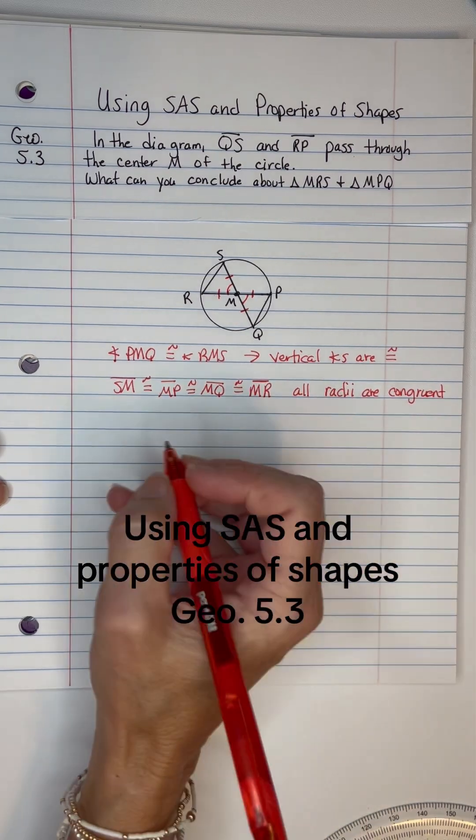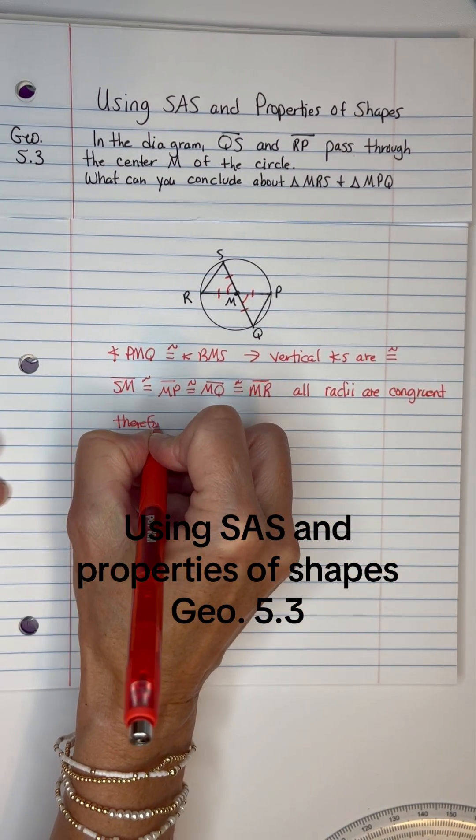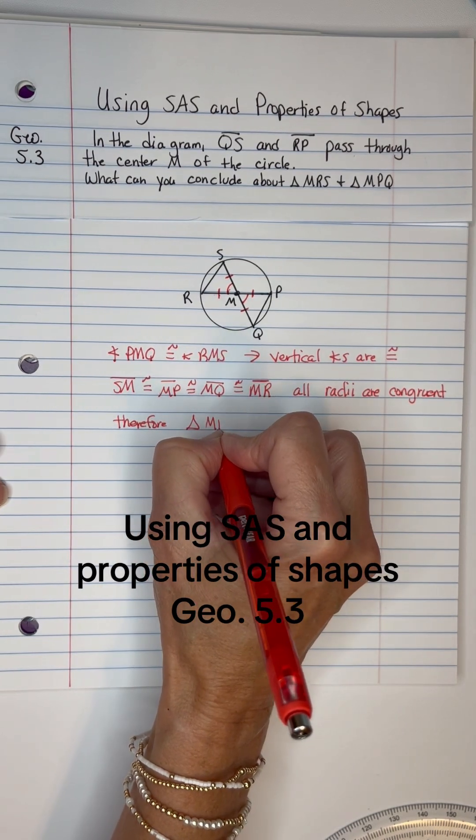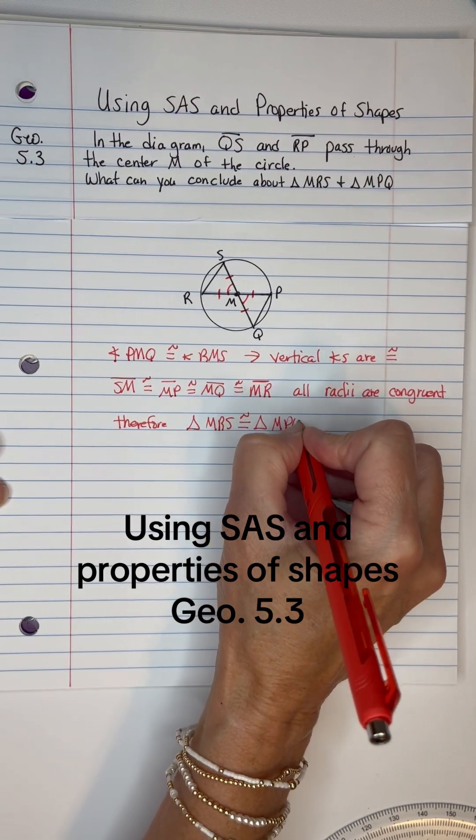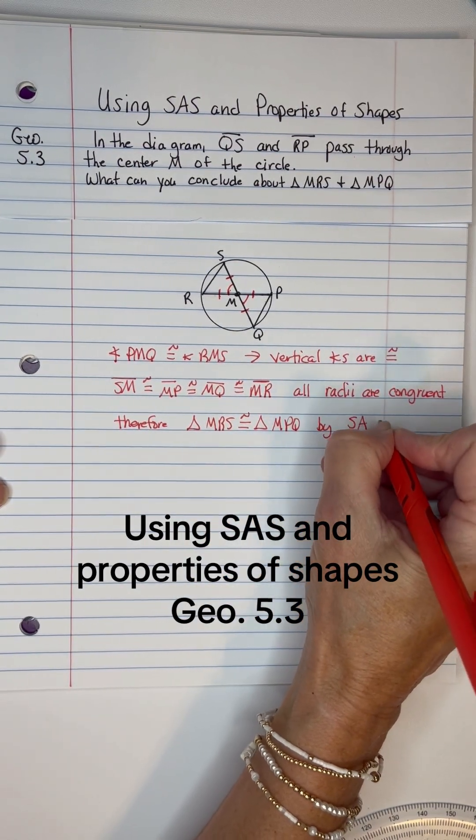All right. So therefore, triangle MRS is congruent to triangle MPQ by side angle side.